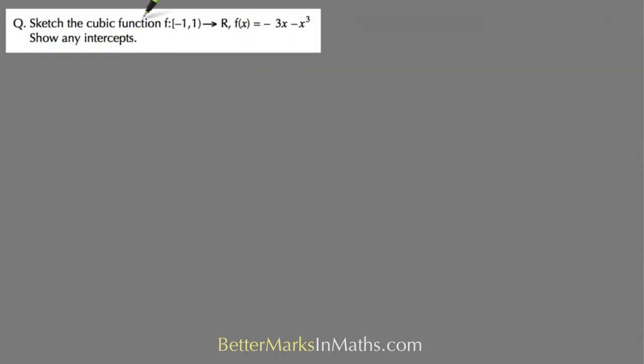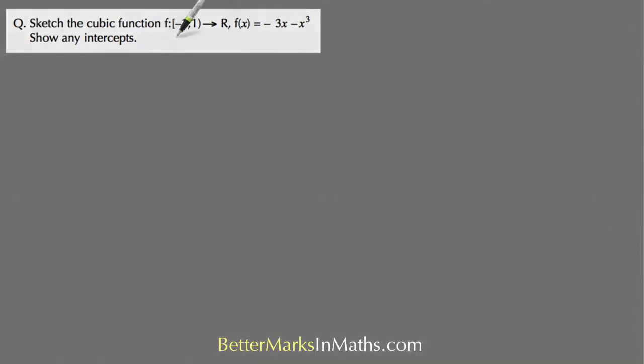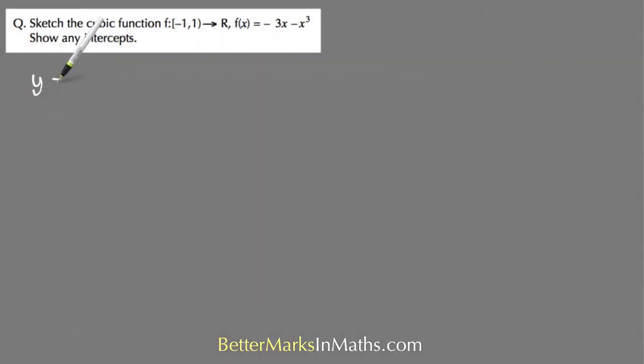The second cubic function has a restricted domain starting with y equals minus 3x minus x cubed. Again, there's a common factor and there's no constant term, so that means it's going to pass through 0, 0. So taking out minus x, you get 3 plus x squared in the bracket.